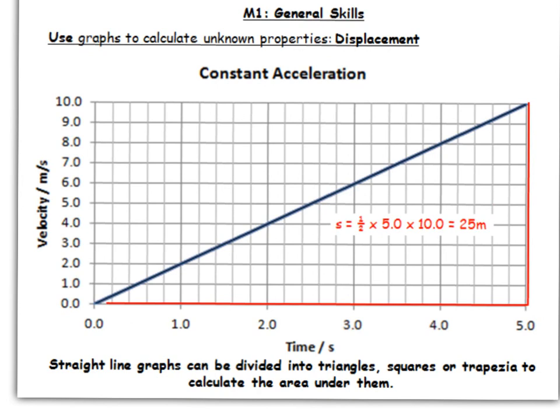So what we can do is, because it's a straight line, we can model it as a triangle, and that will give us a very accurate answer. So the area of a triangle is half times your base, so half times 5.